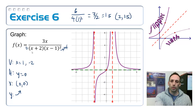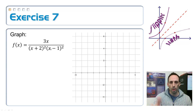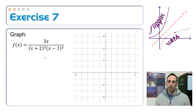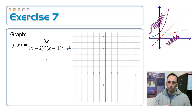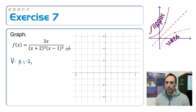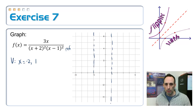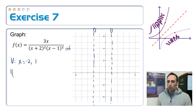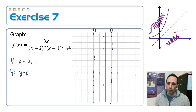One more. Look at this equation — what did I change? I put a squared — a multiplicity of two — on both of the factors in the bottom. That means both of these are going to be referees, so both sides up or both sides down on either side of each asymptote. The vertical asymptotes are still in the exact same location: x equals negative 2 and x equals positive 1. Dash those in. Horizontal asymptote is still y equals zero because I just increased the bottom's degree again — still bigger than the top.